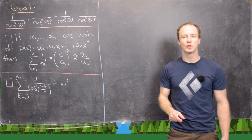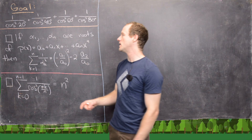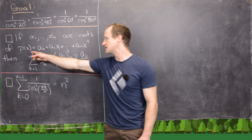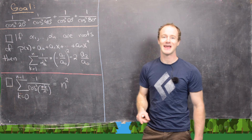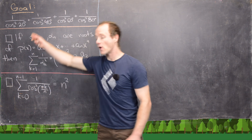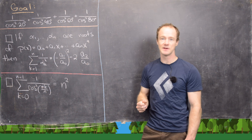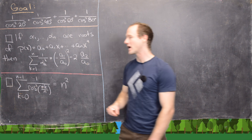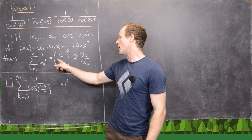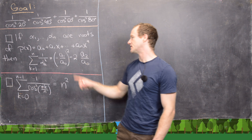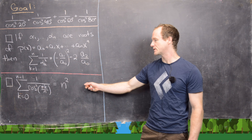We're going to use these two tools, which we will prove. The first one says that if alpha 1 through alpha n are roots of a polynomial p of x — which is a0 plus a1*x all the way up to an*x^n, counting multiplicity — then the sum of the squares of the reciprocals of the roots equals minus a1 over a0 squared minus 2*a2 over a0.